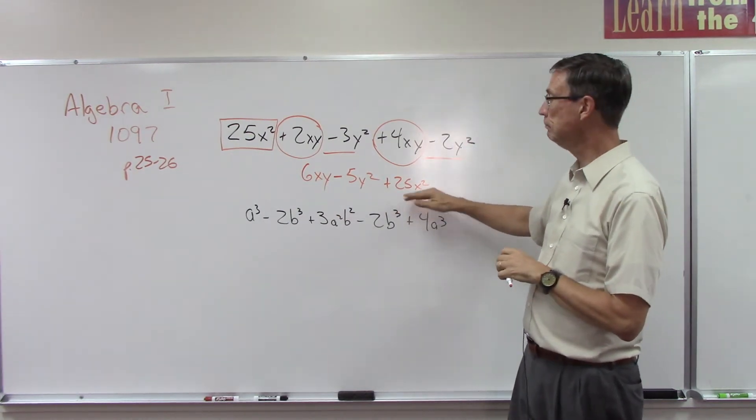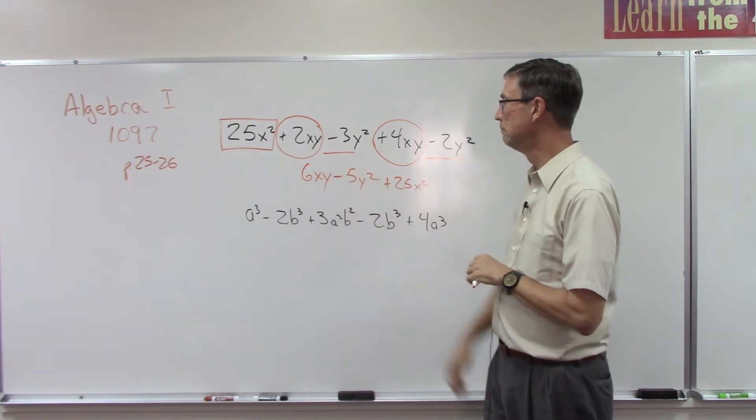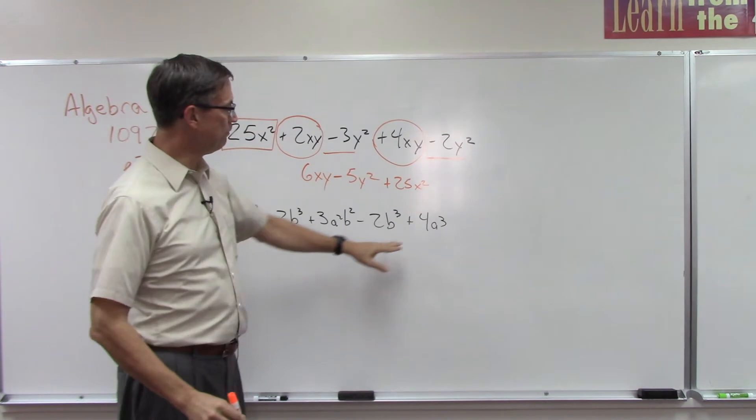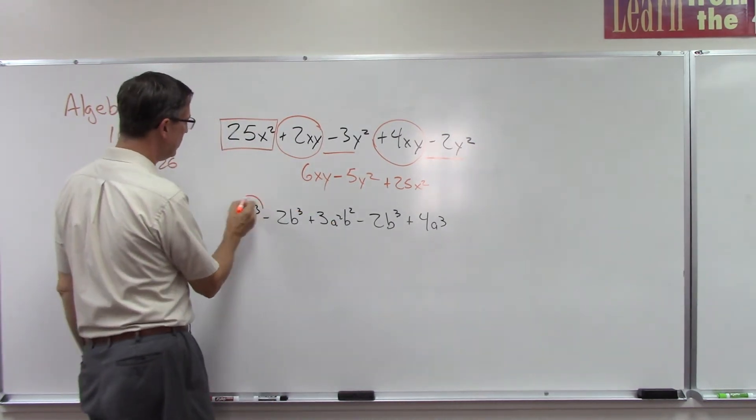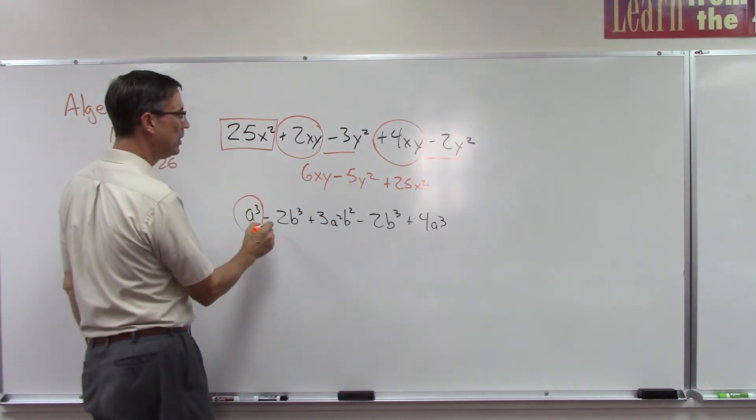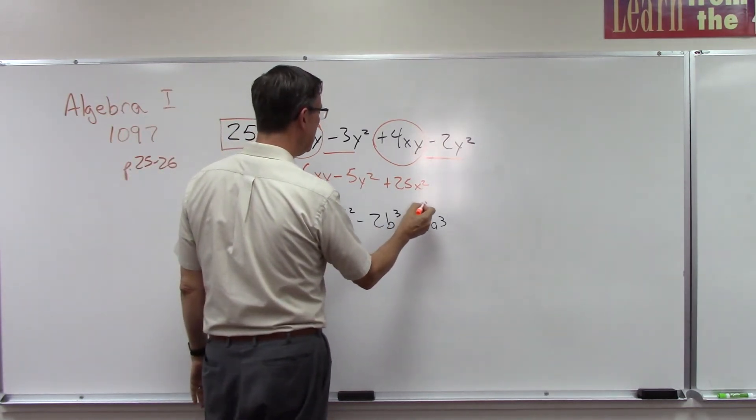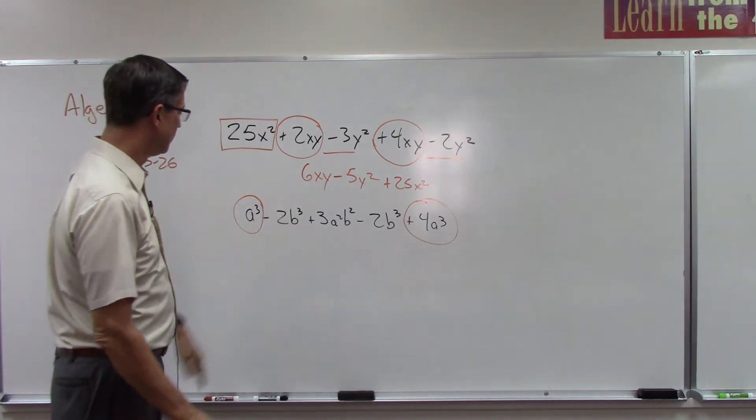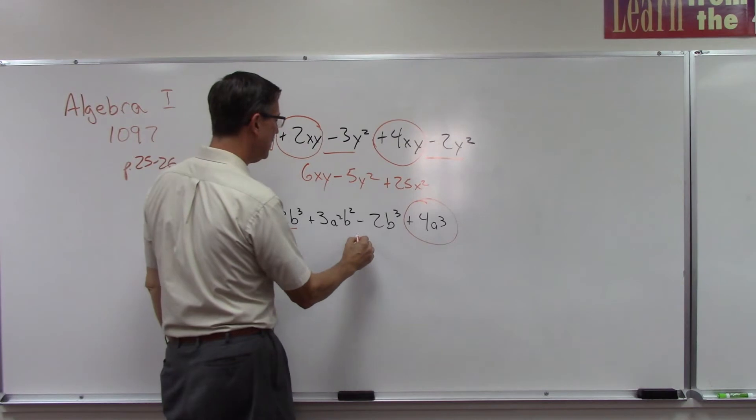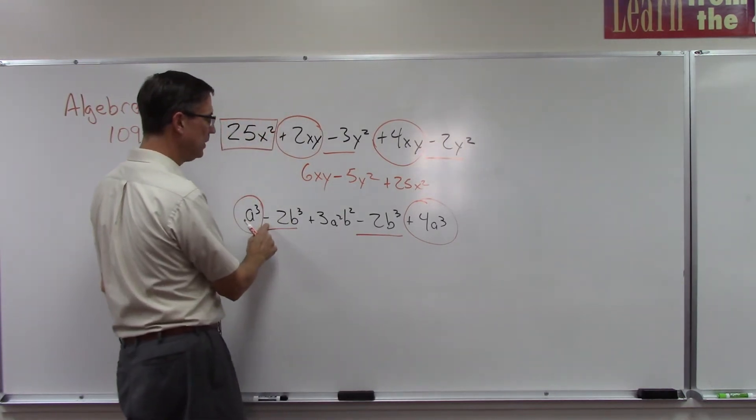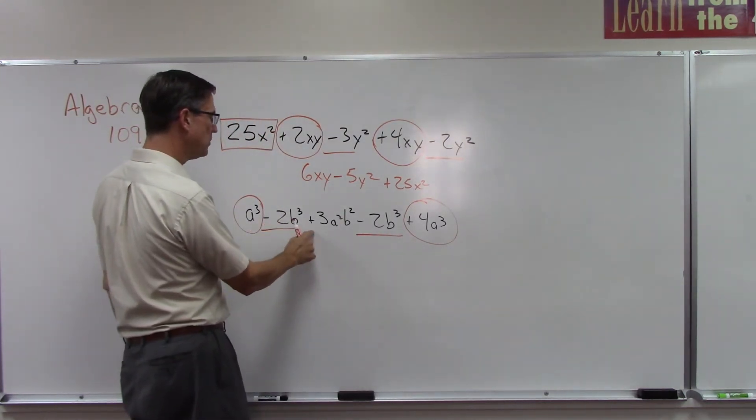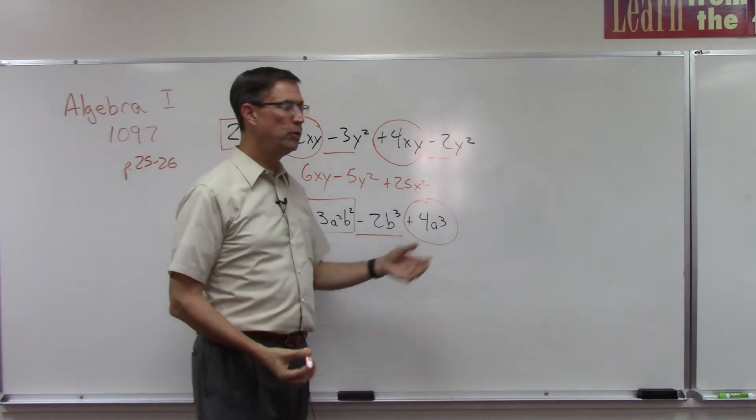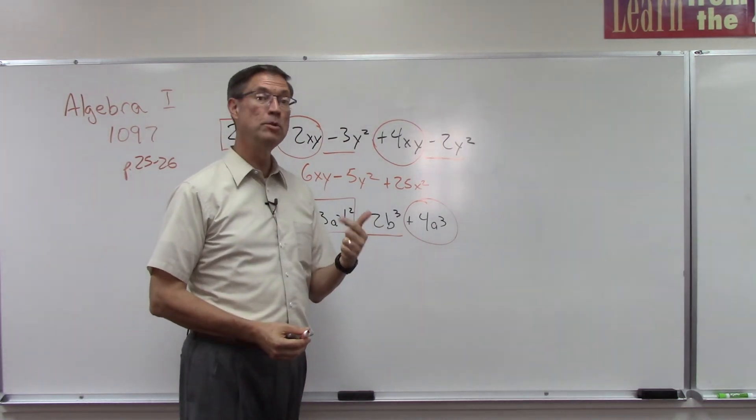Let's do a similar thing here with this problem. I'm just going to set this one up and I want you to finish it. Here's an a³ and I'm looking for another a³. Here's one, I'm going to put a circle around that. Here's a b³, so underline that, underline that. Notice I'm keeping the sign with it. And then this one looks like it's all by itself, I'll put a box around that. The only reason I'm doing this in color and I'm using these different shapes is it helps the brain visualize it.